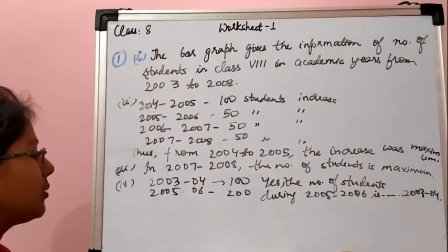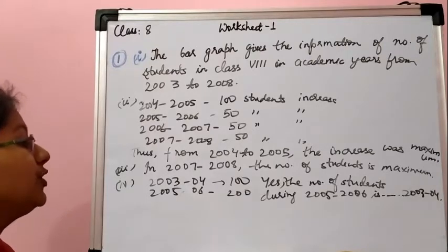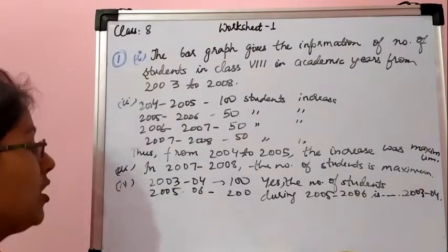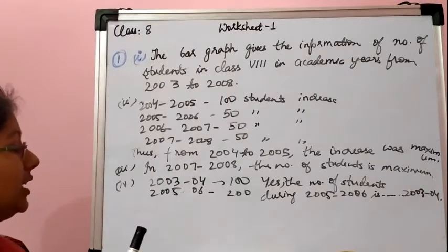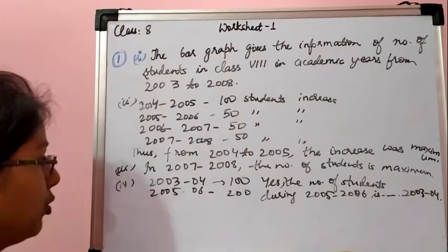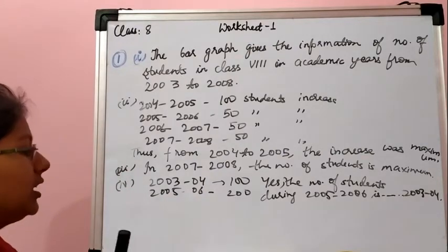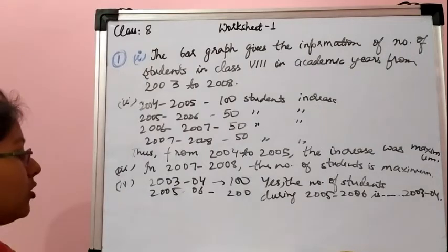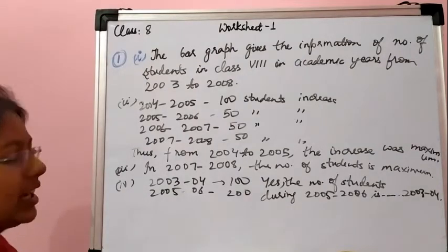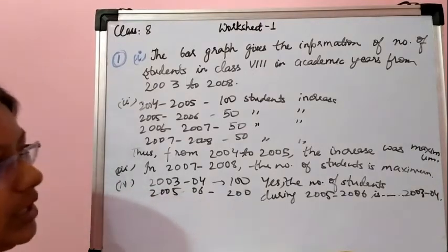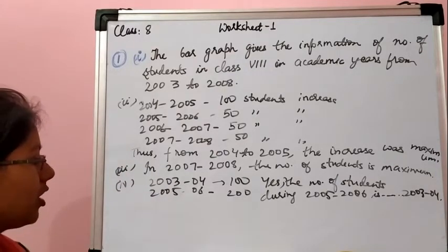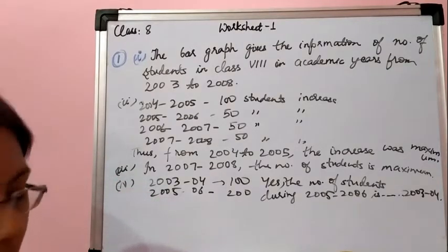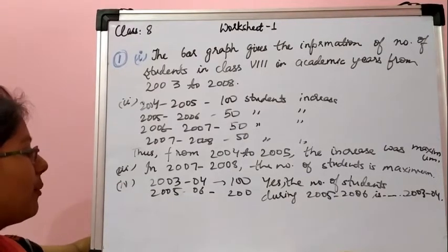We can identify that in maths the performance has increased the most, so the answer to the second part is: in maths. In the third part, in which subject has the performance deteriorated — meaning decreased? The graph goes down for English, so in English the performance has deteriorated. For the fourth part, in which subject is performance at par — meaning equal? We can see that in Hindi the subject performance is at par.